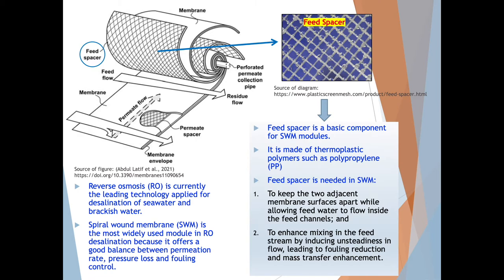Feed spacer, on the other hand, is a basic component for the spiral wound membrane modules, in which it is made of thermoplastic polymers such as polypropylene. Feed spacer is needed in spiral wound membrane to first keep the two adjacent membrane surfaces apart while allowing feed water to flow inside the feed channels, and to enhance mixing in the feed stream by inducing unsteadiness in flow, leading to fouling reduction and mass transfer enhancement.